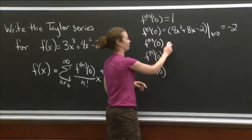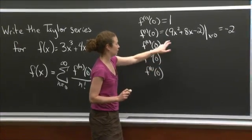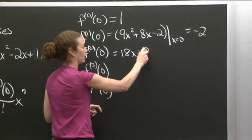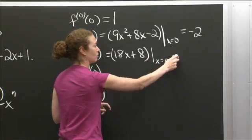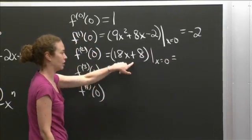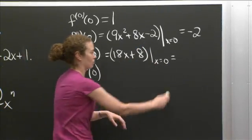All right, well, let me take the second derivative. Let's see what I get here. I get 18x plus 8, and I'm going to evaluate that at x equals 0. This is just a way to write I'm going to evaluate what's here at x equal this number. So I get 8.